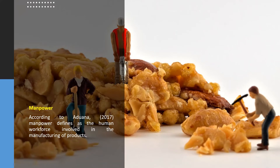Manpower requirements. According to Ajuana (2017), manpower is defined as the human workforce involved in the manufacturing of products. It is considered to be the most vital factor in production. Business entrepreneurs must determine, acquire, and match qualified employees with jobs in the most appropriate period. It measures the most serious and main factor of production. The entrepreneur must determine, attain, and match the most competent and skilled employees with the jobs at the most appropriate period. Educational qualifications and experience, the status of employment, numbers of workers required, and skills and expertise required for the job are some of the manpower criteria that must be highly considered by the entrepreneur.